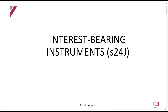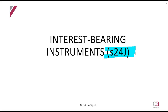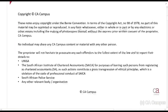Welcome to this lecture on Section 24J. Section 24J is a section that pops up quite a bit in our questions, but it is very, very simple. It is very similar to what you do in financial accounting and management accounting, but I'm going to be focusing on the theory side of it, building up to show you how the Act is written to incorporate this, in case you have to do a discussion type question. It's mostly asked as calculations, and the calculations are quite simple.